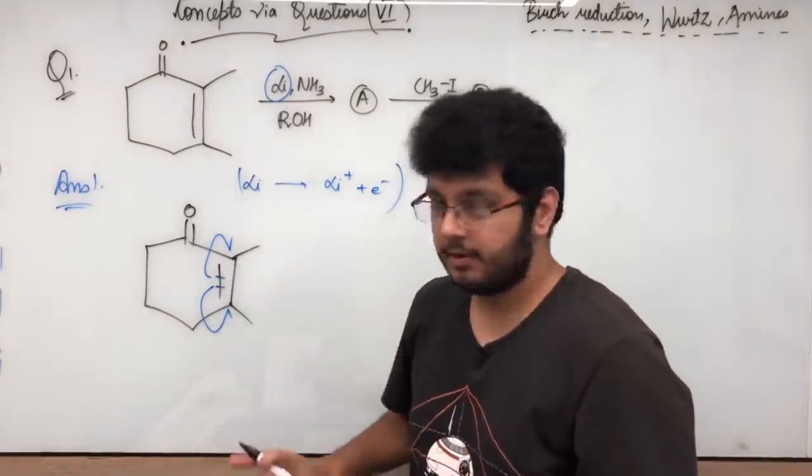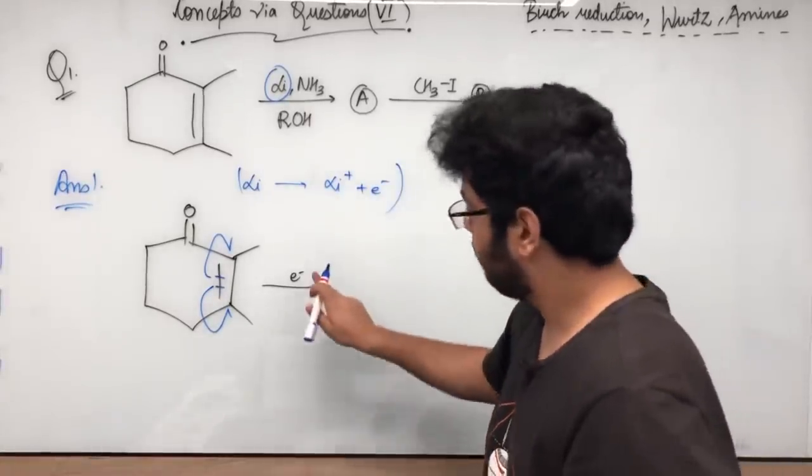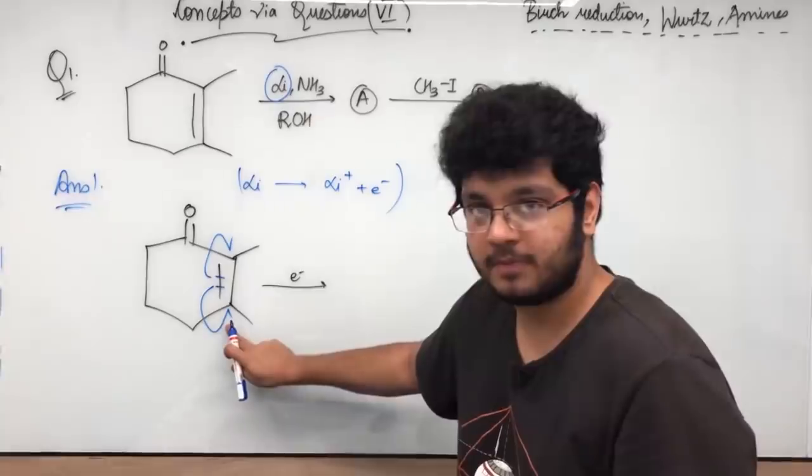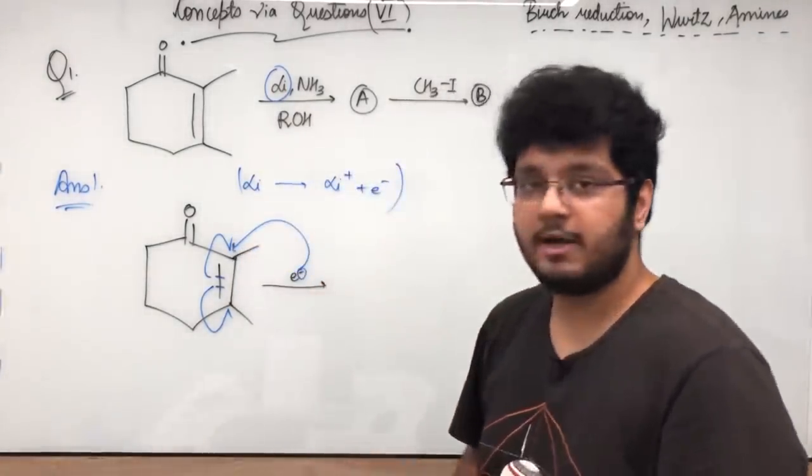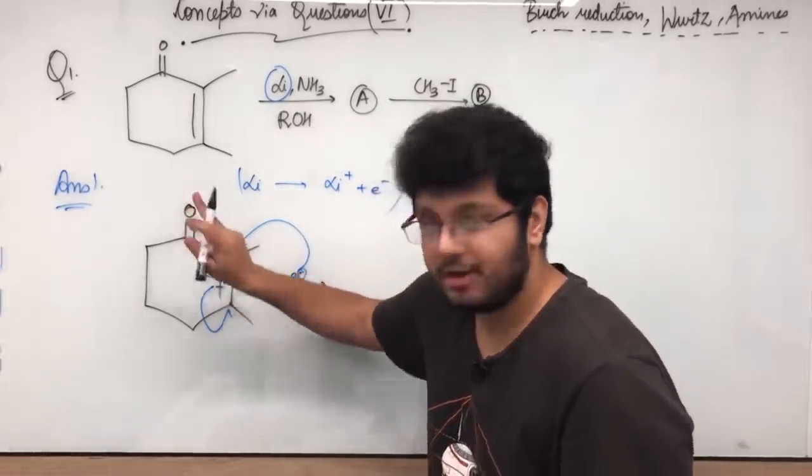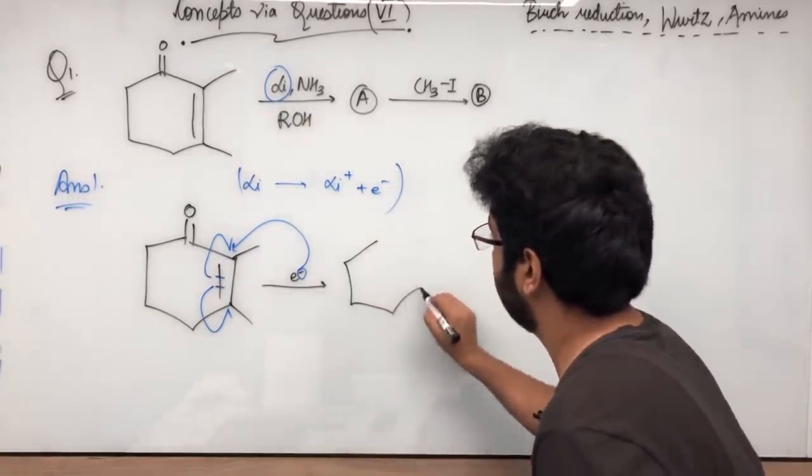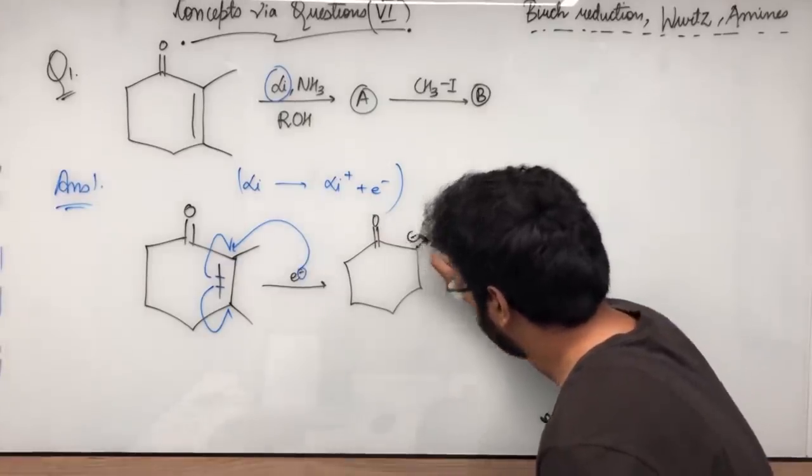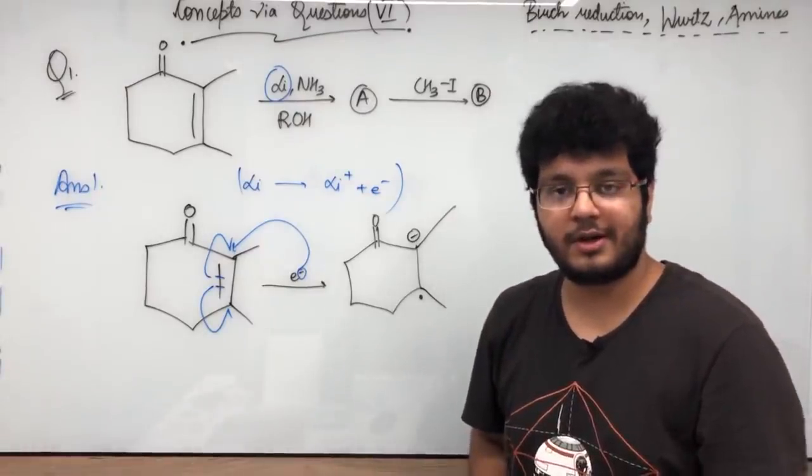Radical radical. Now I have electron here. Now tell me, the electron would like to go to this position or this position? The electron would go onto this position. Why? Because which will become a negative charge that will be more stable because it will be resonance with the carbonyl group. So we will get the formation of C double bond O. Negative would be formed here and a radical would be formed here.